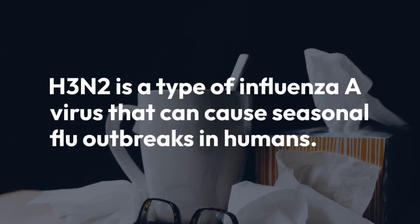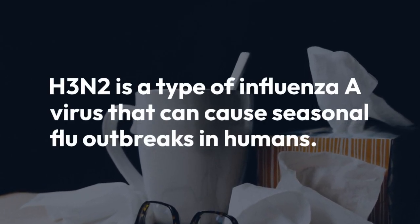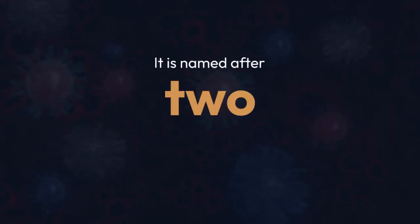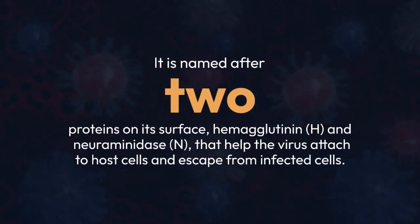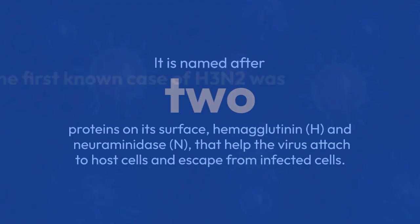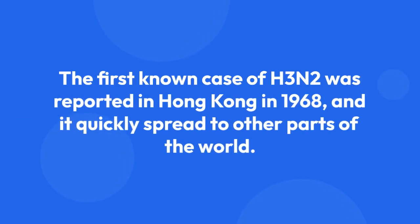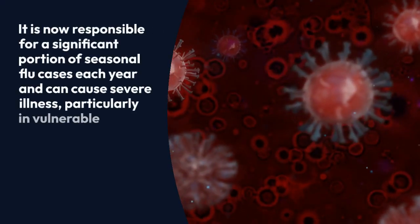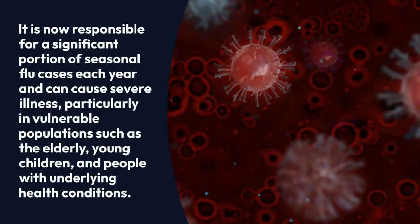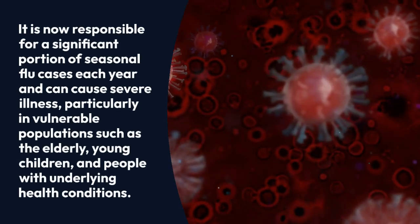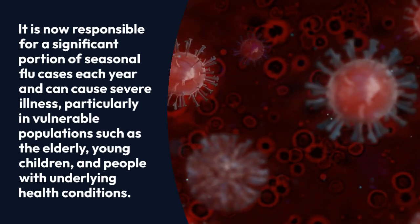H3N2 is a type of influenza A virus that can cause seasonal flu outbreaks in humans. It is named after two proteins on its surface, hemagglutinin (H) and neuraminidase (N), that help the virus attach to host cells and escape from infected cells. The first known case of H3N2 was reported in Hong Kong in 1968, and it quickly spread to other parts of the world. It is now responsible for a significant portion of seasonal flu cases each year and can cause severe illness, particularly in vulnerable populations such as the elderly, young children, and people with underlying health conditions.